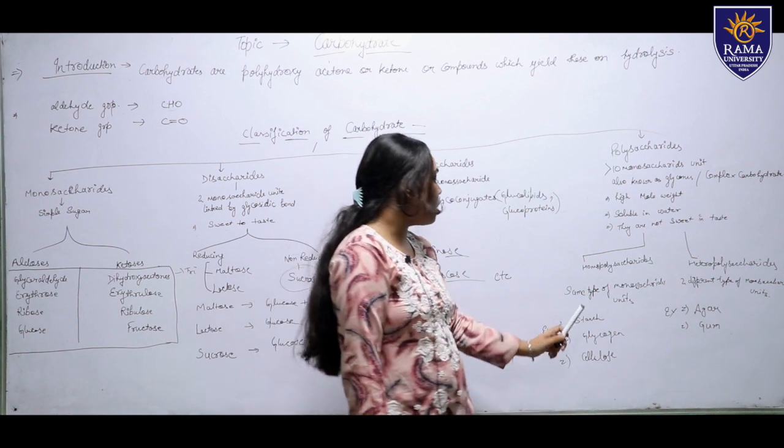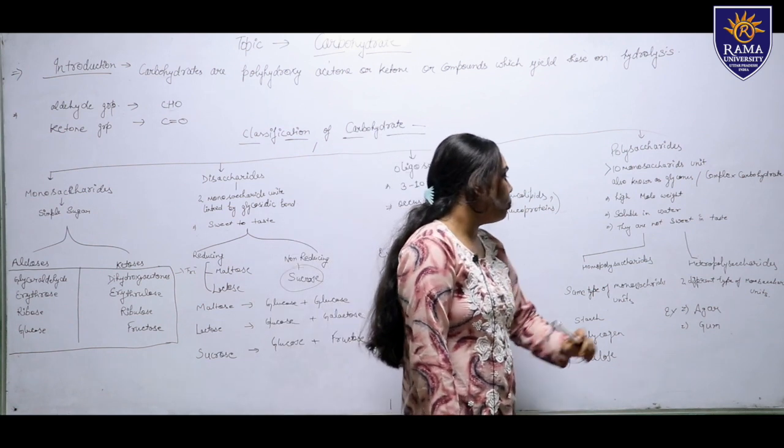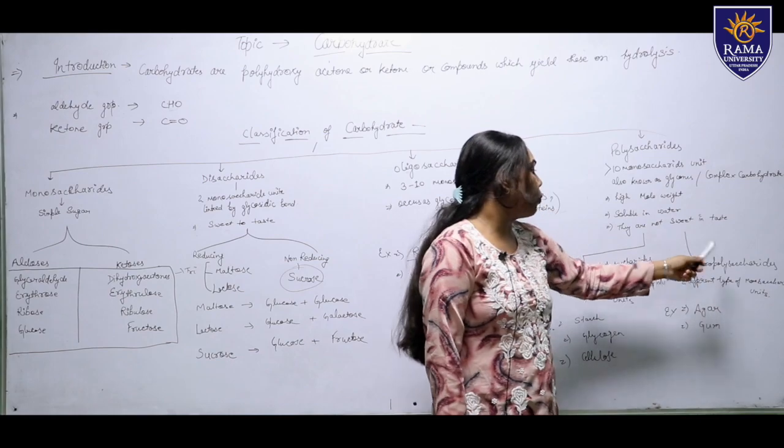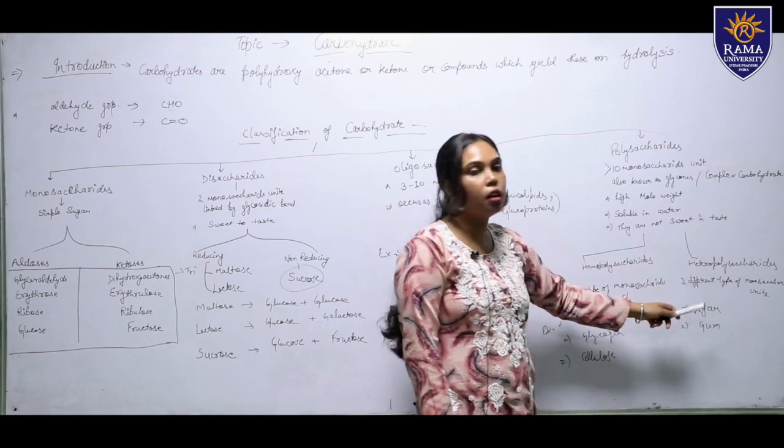Examples of homopolysaccharides are starch, glycogen, and cellulose. Examples of heteropolysaccharides are agar and gum.